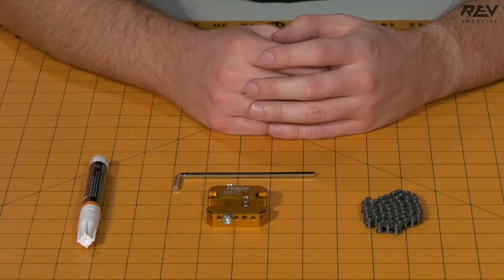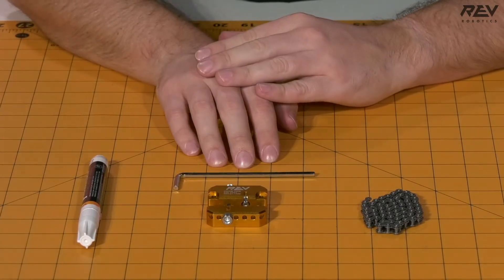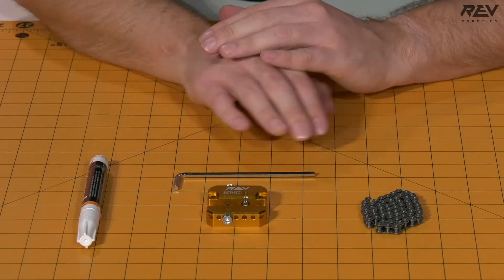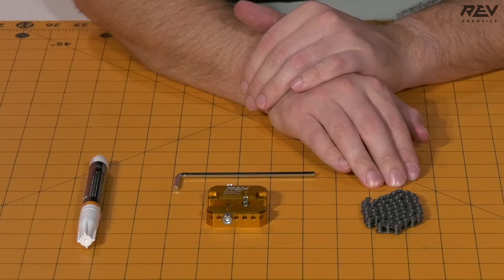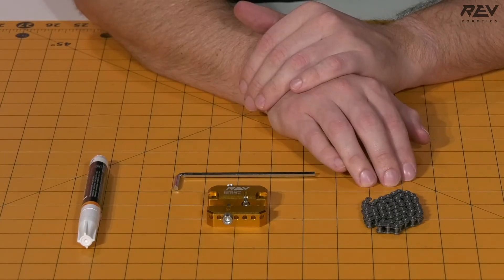We are making the chain links for your drivetrain. For this step you're going to need a chain tool, the included Allen key for the chain tool, and chain that is going to be longer than the length you're breaking. For this segment we're going to need something longer than 56 links of chain.